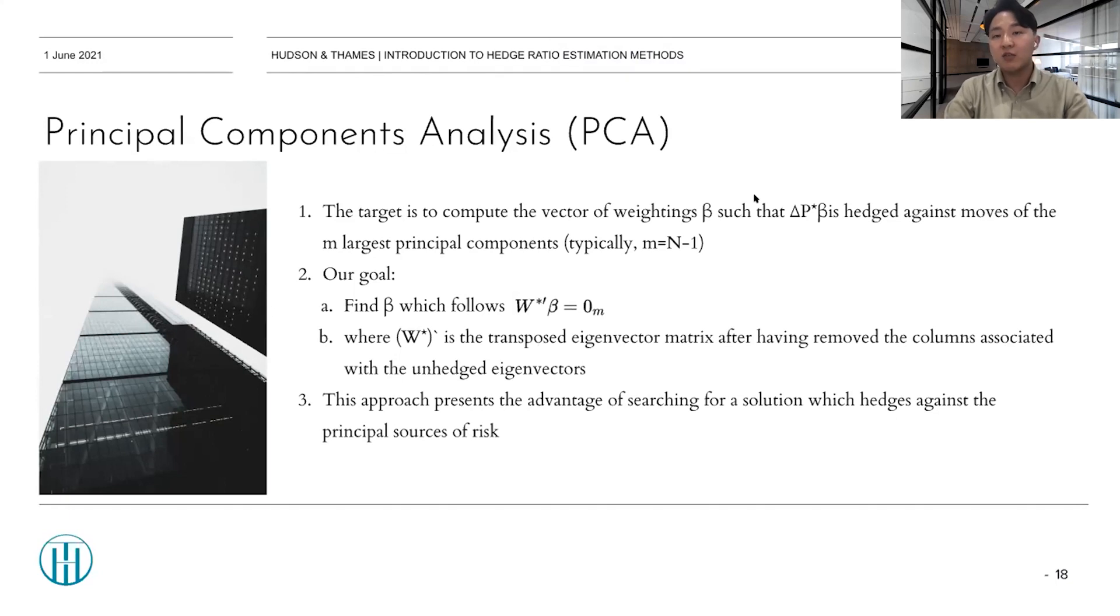And this approach presents the advantage of searching for a solution that hedges against the principal sources of risk. And, like the past two methods in the single period method, it does not guarantee that the source of risk we remain exposed to is stationary. However, it could be said that having the smallest variance in differences, the stationarity of the eigenvectors with the smallest eigenvalues is a minor concern, as the components we remain exposed to have the smallest variances in differences. And this makes PCA a valid consistent method of hedging, and that's why it is used a lot.